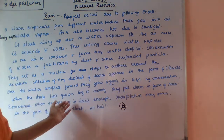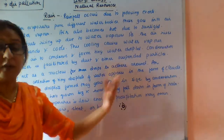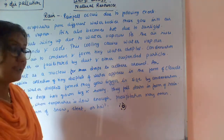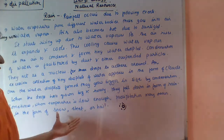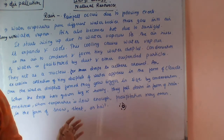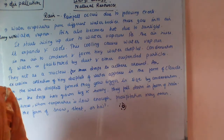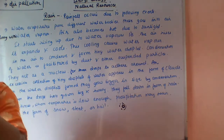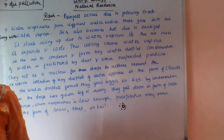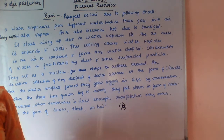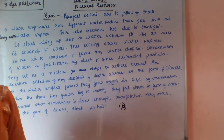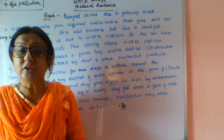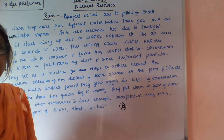Sometimes when the temperature is low enough, precipitation may occur in the form of snow, sleet, or hail. The rainfall patterns are decided by prevailing wind patterns. In large parts of our country, rains are mostly brought by the southwest or northeast monsoons, and in some areas they are caused by depressions.